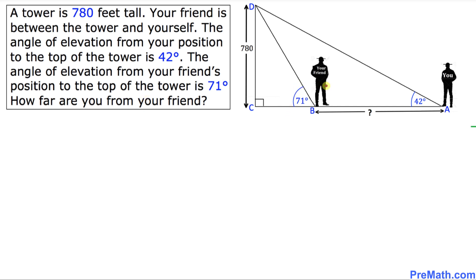So let's go over this visual representation pretty quick. You are right here, and the angle of elevation is 42 degrees from this tower that is 780 feet high, and your friend is right up here at point B that has an angle of elevation of 71 degrees from the tower and we've been asked to find the distance between these two friends. That means we want to find this length AB.